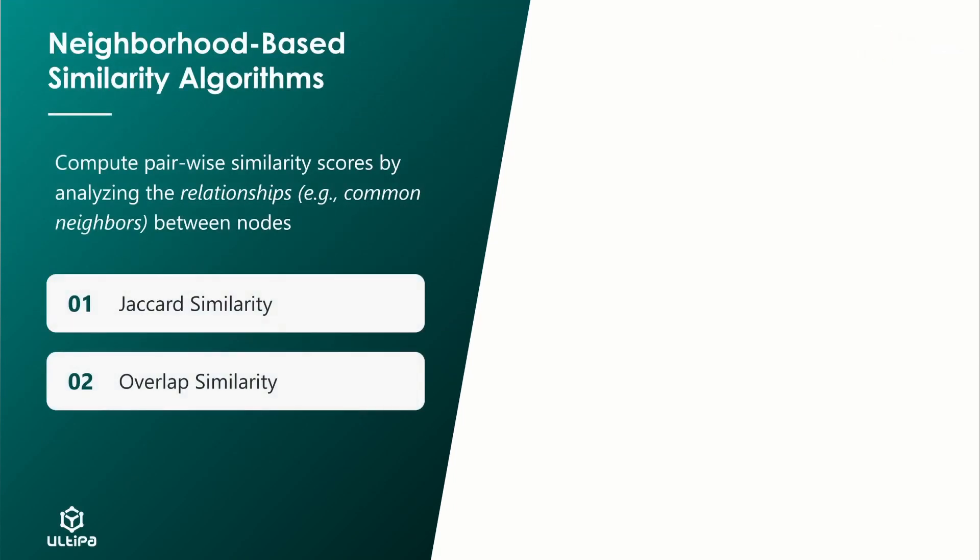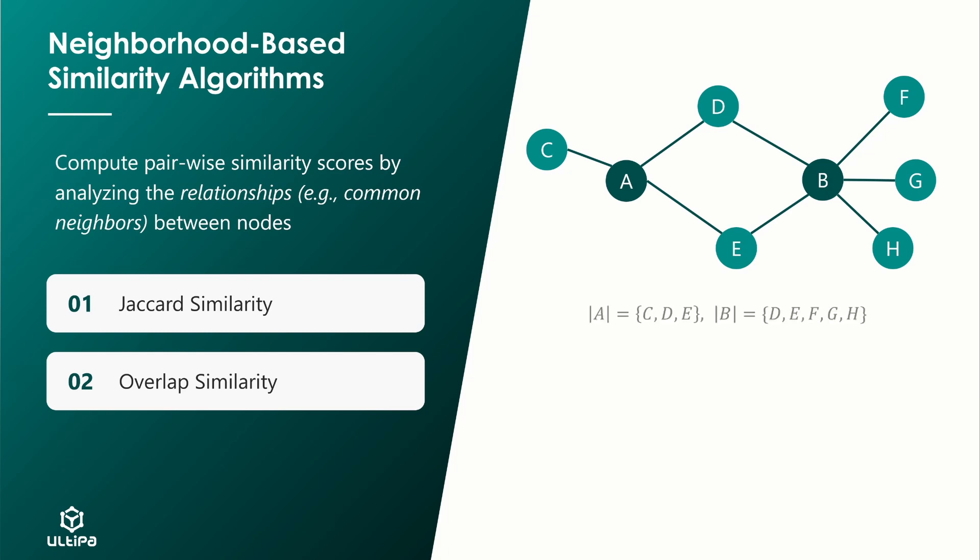Neighborhood-based similarity algorithms compute pairwise similarity scores by analyzing the relationships between nodes, which are Jaccard similarity and overlap similarity. They both consider the common neighbors the two nodes share. In this example, if we collect all the neighbors of node A and B into two sets, then their common neighbors can be represented by the intersection of the two sets.